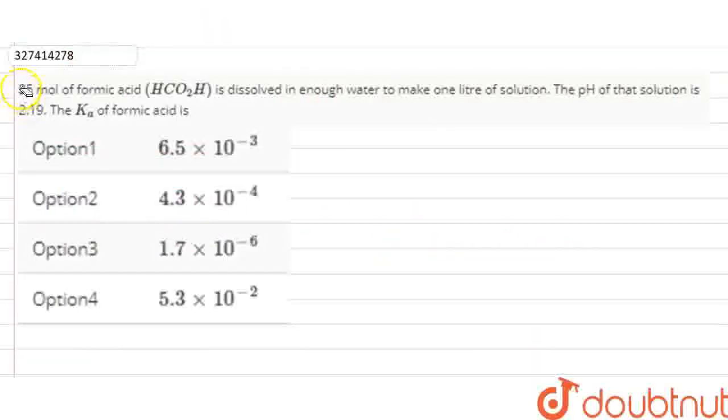So the question is, 25 moles of formic acid is dissolved in enough water to make 1 liter of solution. And the pH of that solution is 2.19. Then the Ka or the acid ionization constant of formic acid is what?